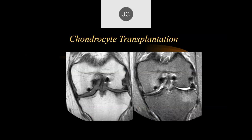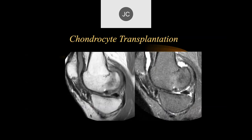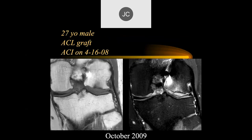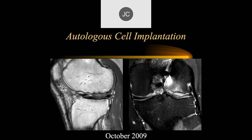Here's an example of a case that had chondrocyte transplantation. Another defect had a graft on 4-16-2008 — the abnormal bone edema is not good; with successful grafts the edema goes away. One complication: the graft is thicker than the regular articular cartilage, so it's proud — you occasionally have to go in and ream it down if it overgrows. This is called autologous cell implantation.